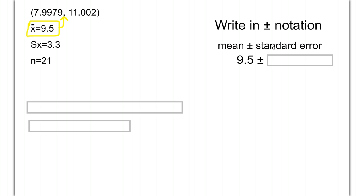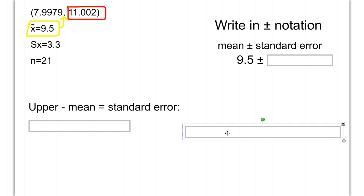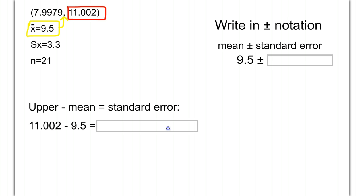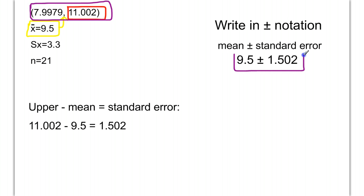Plus or minus the standard error. Now to find the standard error, all you have to do is take either end of your confidence interval. So let's say we'll pick the upper end and subtract away the mean. So we take our upper end minus the mean, which would be 11.002 minus our 9.5, and we're going to get 1.502. So our mean, 9.5 plus or minus 1.502, would be how we would rewrite this confidence interval into the plus-minus notation.